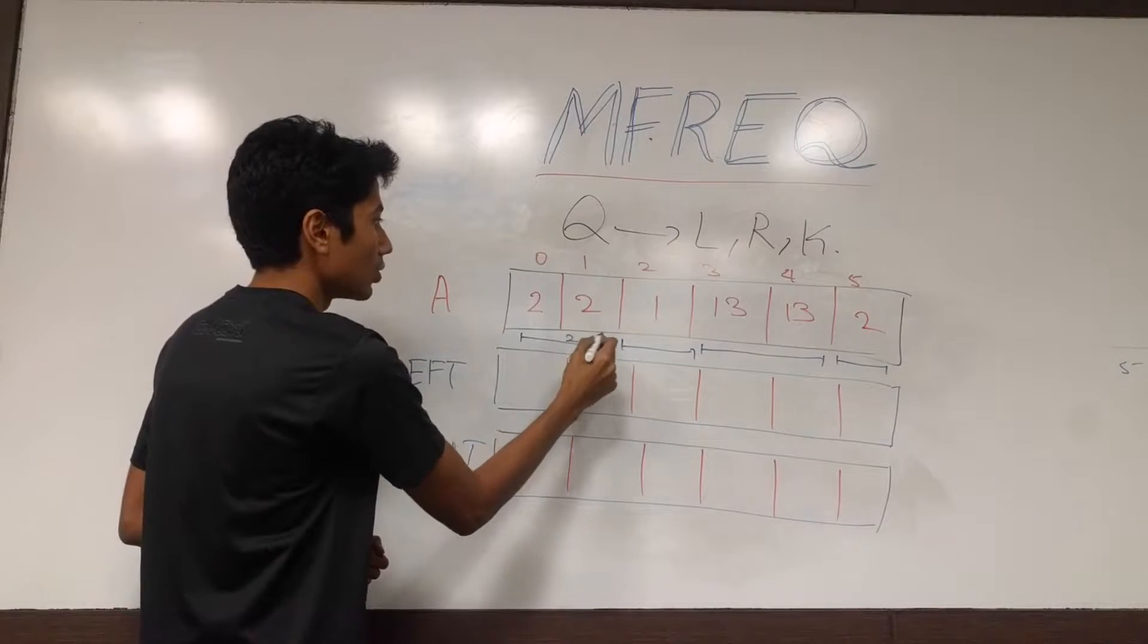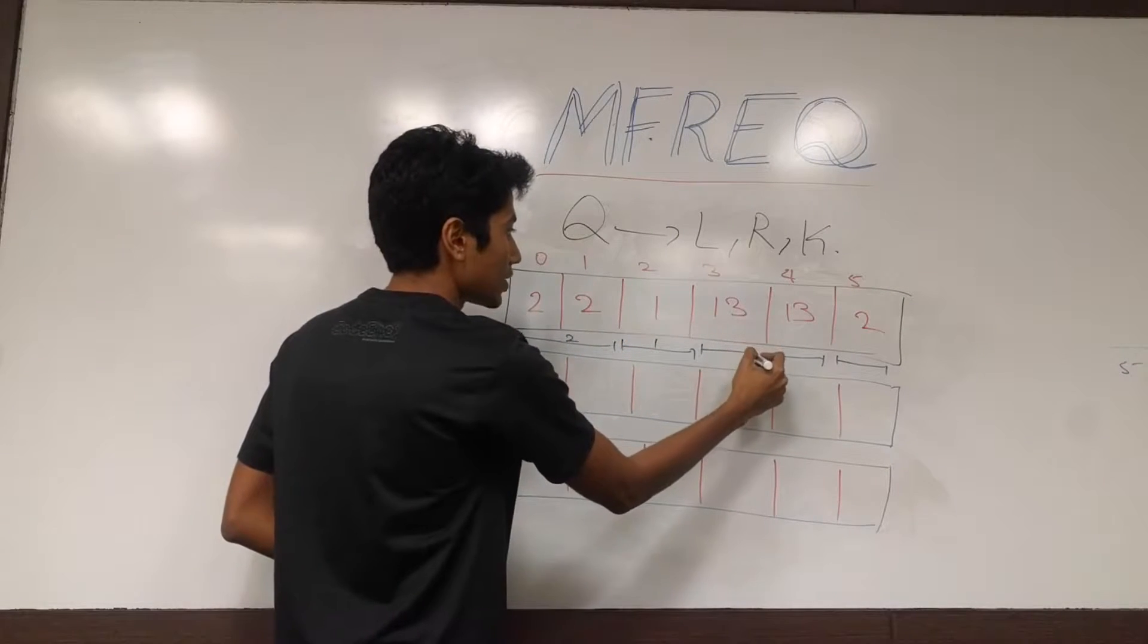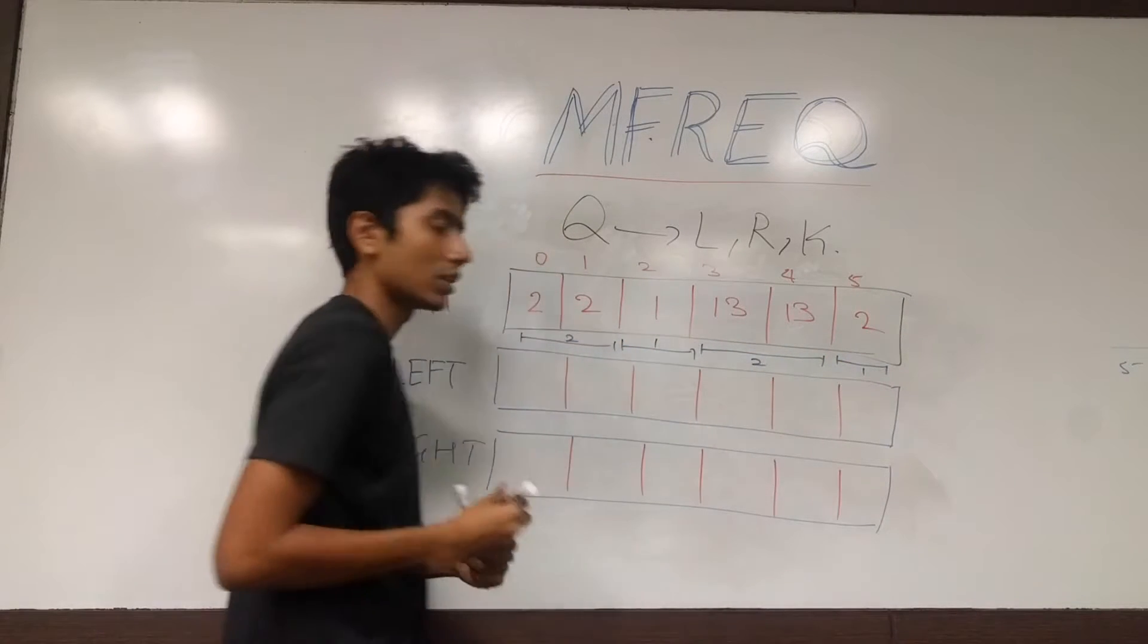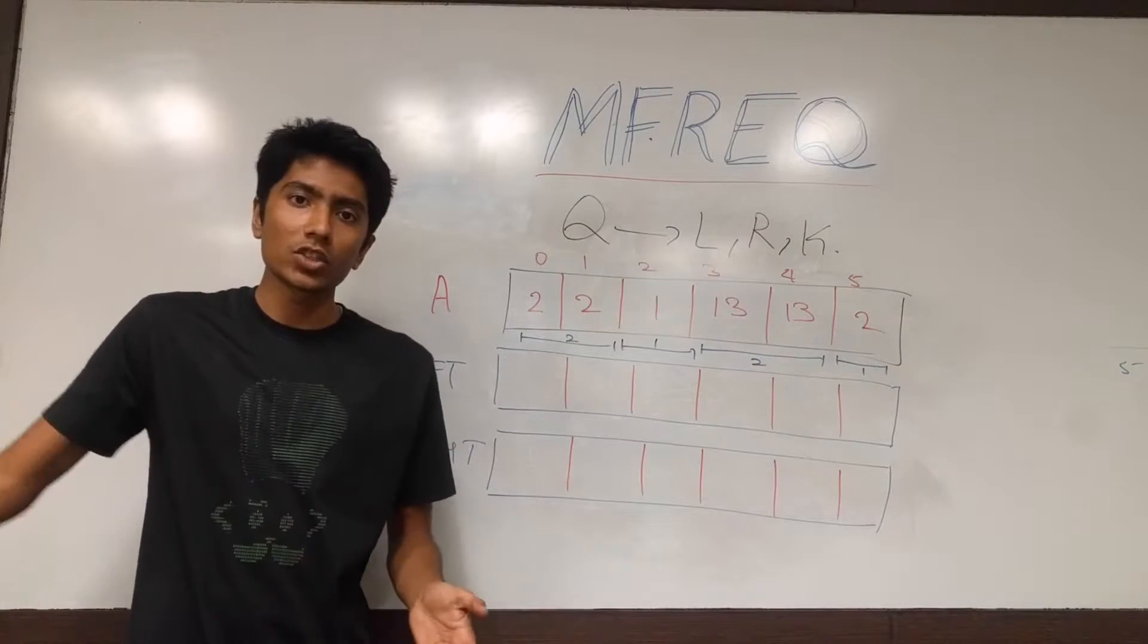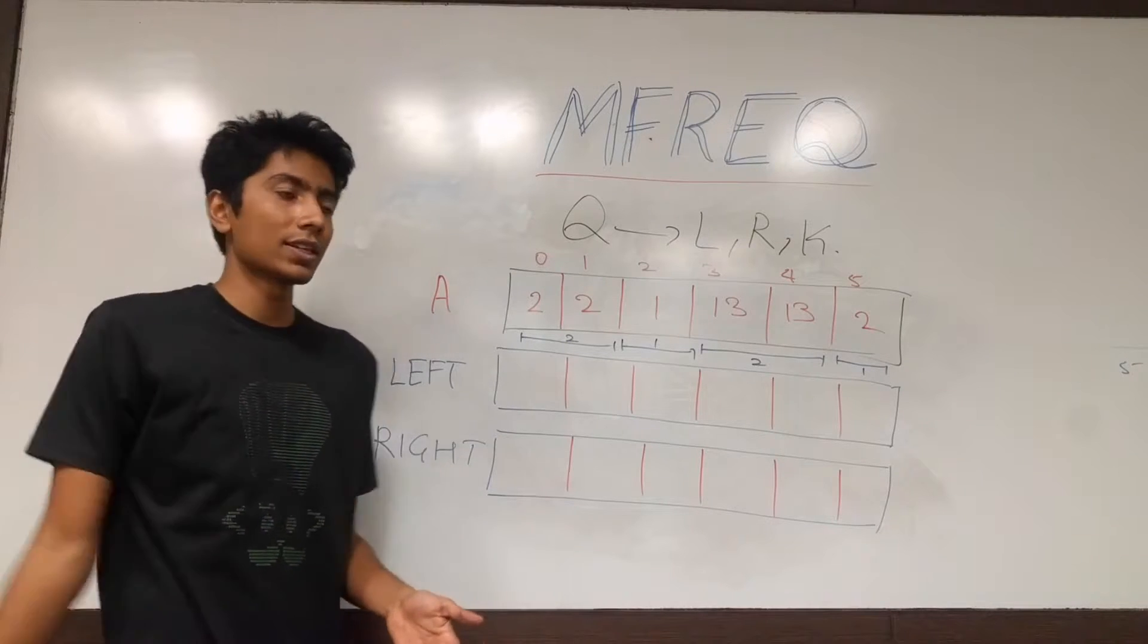So this run is of size 2, this run is of size 1, this run is of size 2 again, this run is of size 1. That's how we are going to define what runs are. Starting from a particular index, contiguous elements, up to a particular size.